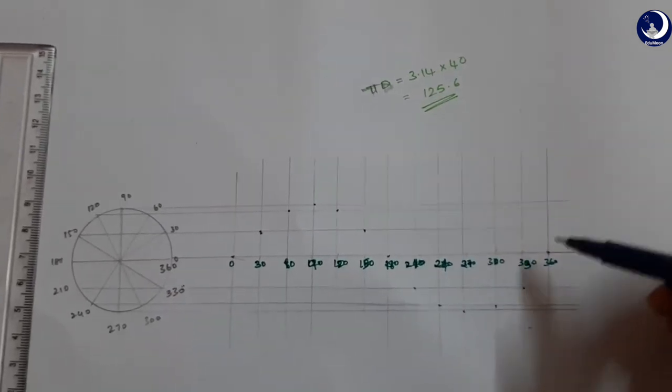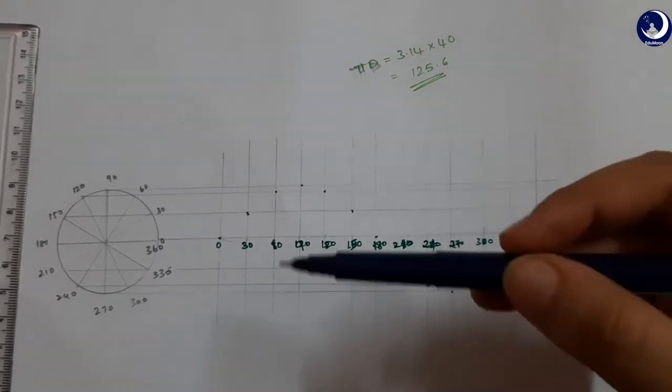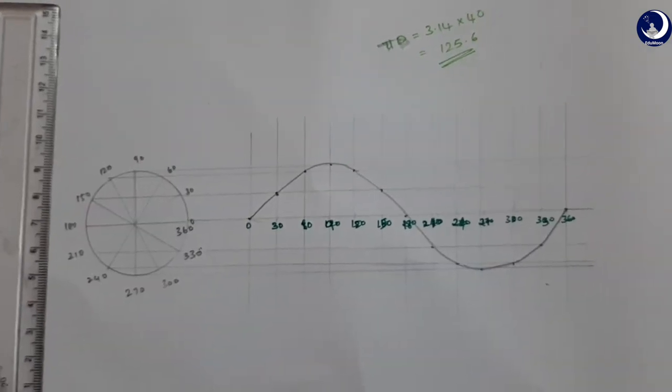Now joining these points will give us a sine curve. You can join these points using freehand or using French curves. So the curve will look like this.